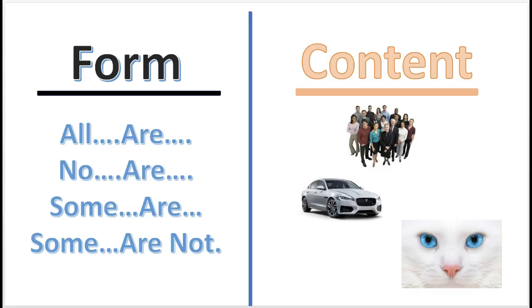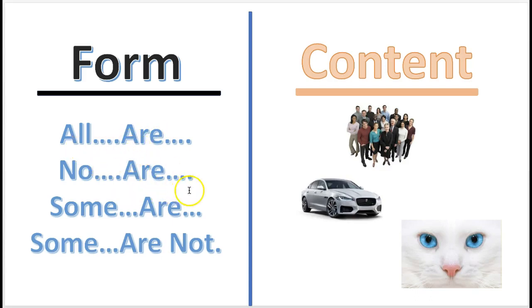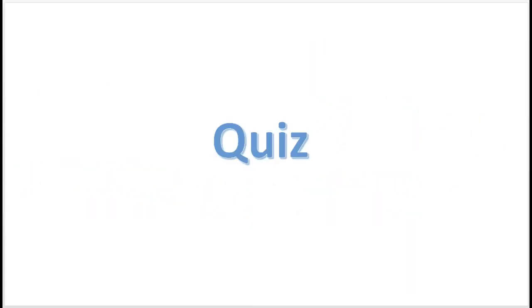Now these fallacies can be found in the form or the content. The form is how the argument is constructed — is it constructed in a valid way? We'll get into that. Or is it found in the content — the information contained in the argument?